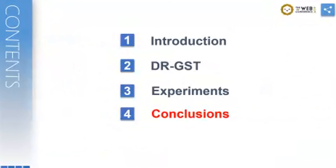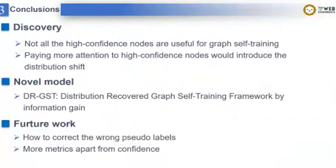Finally, let me make a summarization. As a whole, we have two discoveries. We find that not all the high-confidence nodes are useful for graph self-training, and paying more attention to high-confidence nodes would introduce the distribution shift. To overcome such defects, we propose a novel graph self-training framework, DR-GST, and theoretically prove its rationality.